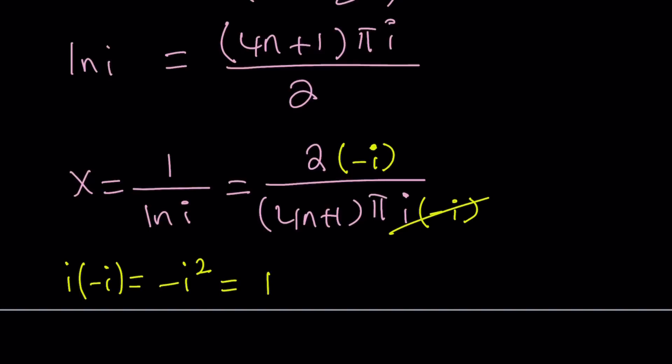So this is going to give us a 1 here, which is nice. And then from here, x is going to be negative 2i divided by 4n plus 1 multiplied by π. There's no i at the bottom anymore. This is going to be our x value for n integer values.